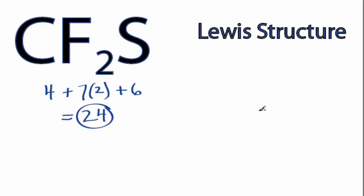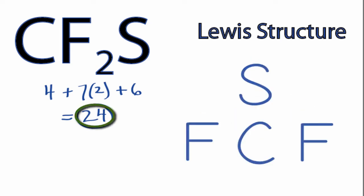Carbon is the least electronegative atom, so we'll put that at the center, then we'll put fluorines on the outside and sulfur on top. We have a total of 24 valence electrons.